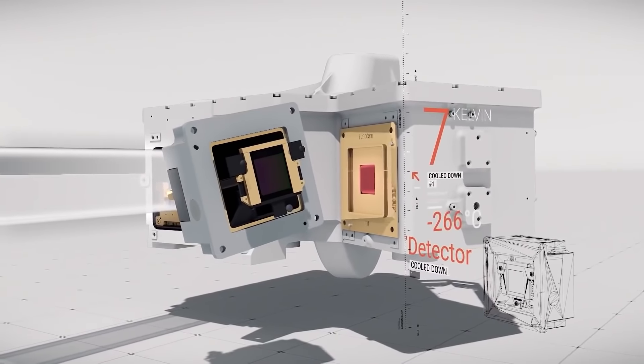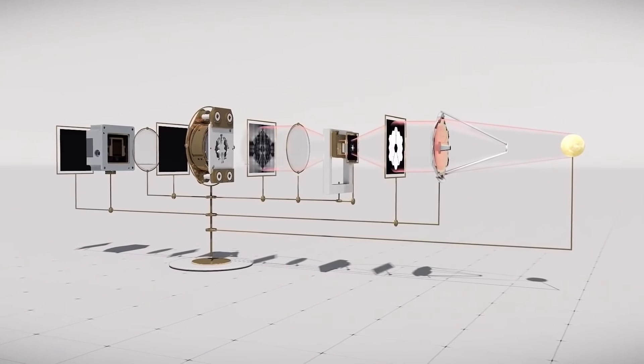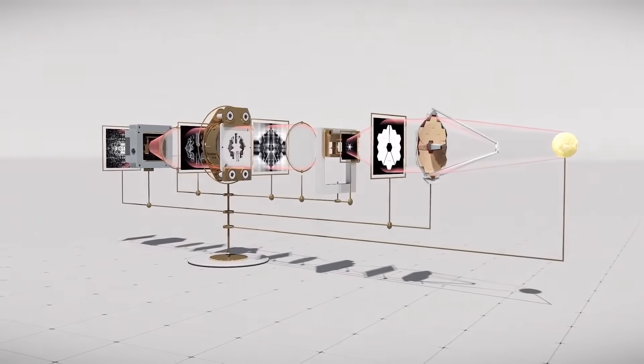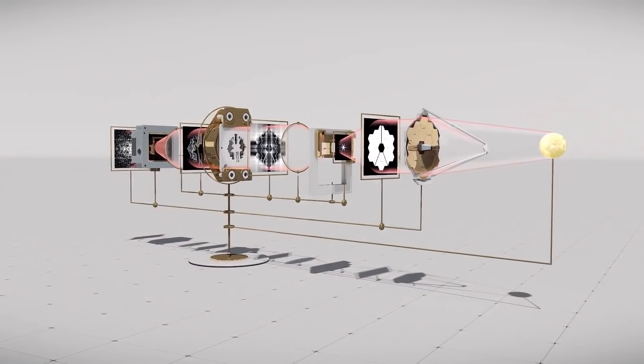According to NASA, the JWST is so sensitive to infrared light that it would be able to detect even the tiniest amount of heat from a bumblebee even at a distance of a million miles from Earth.